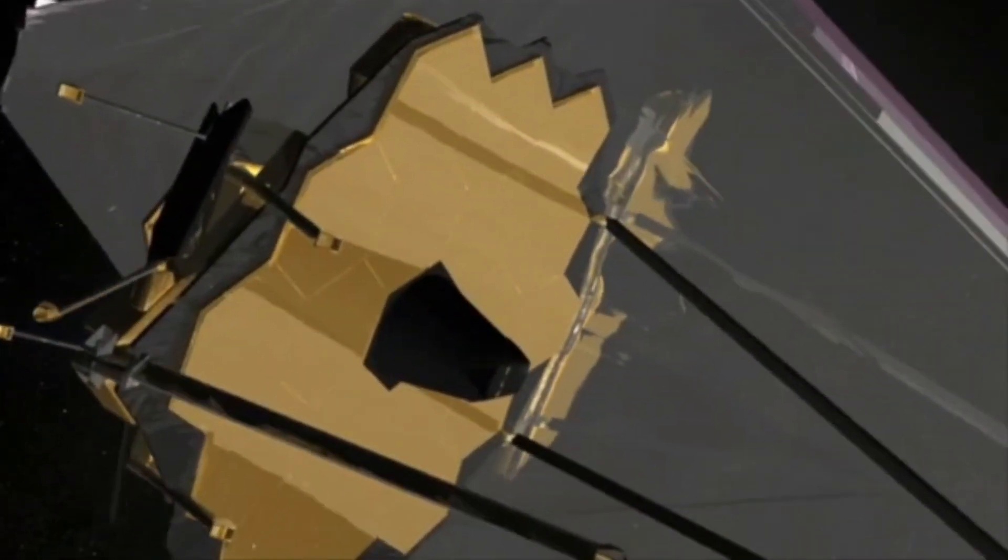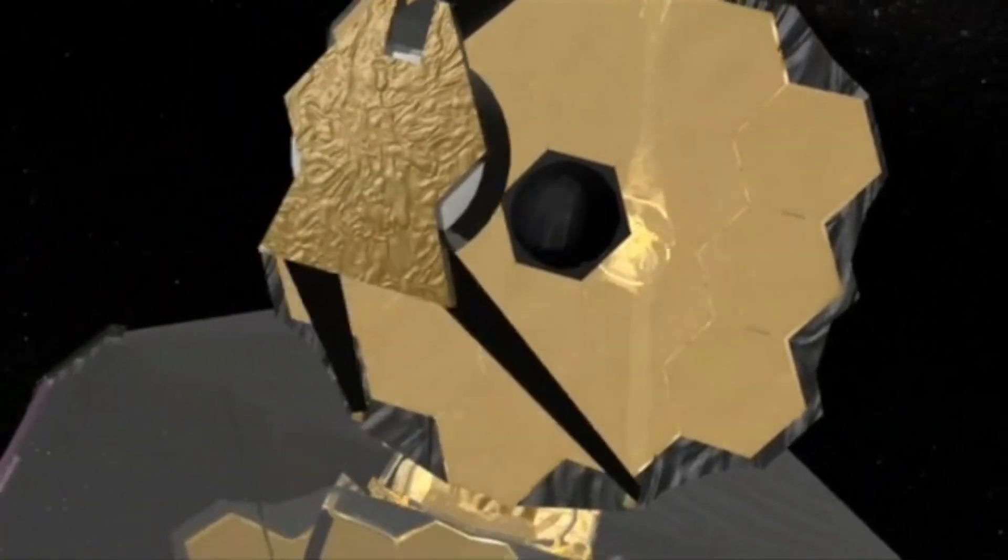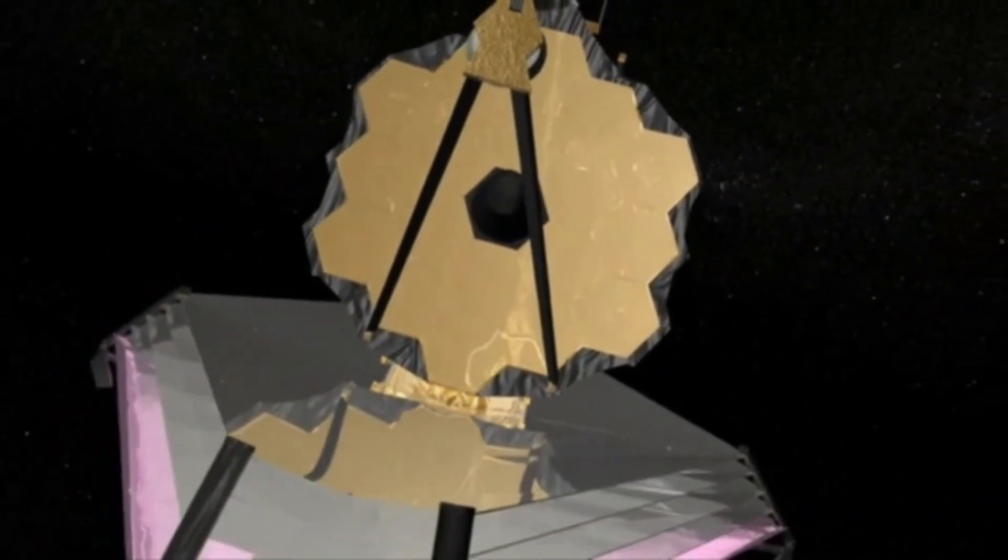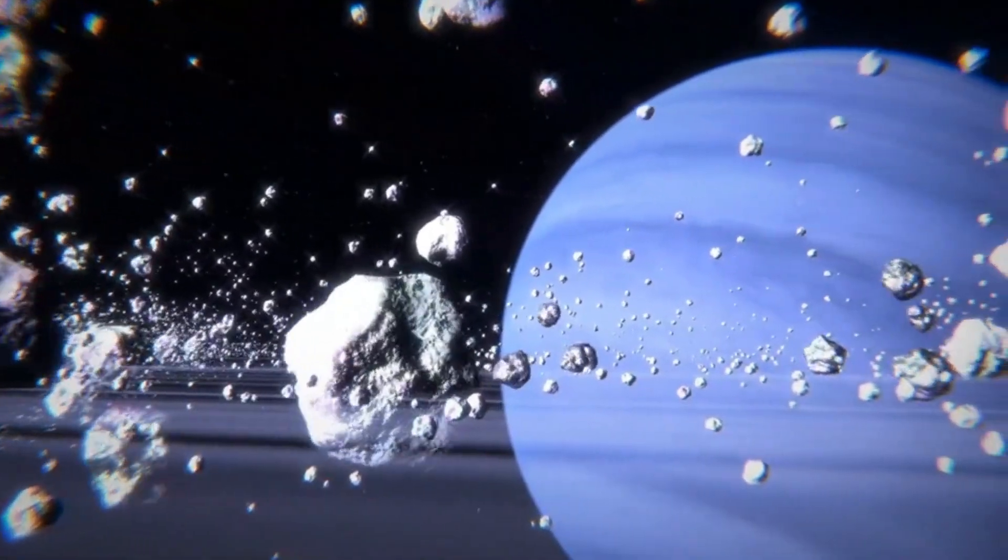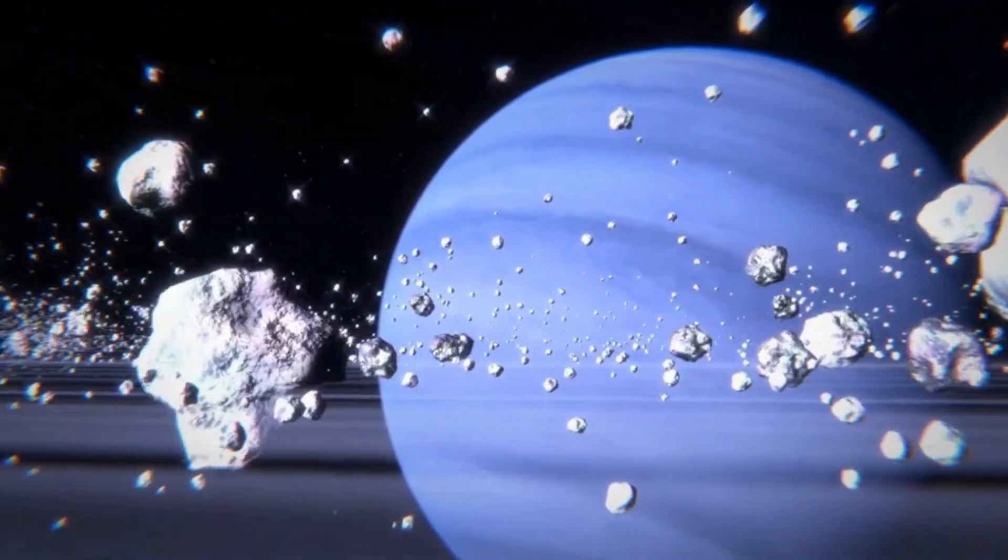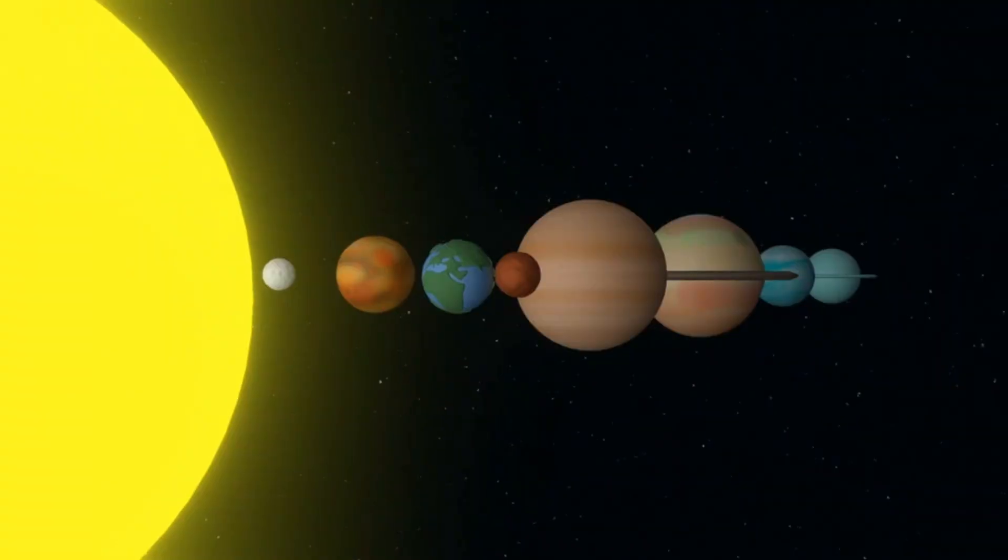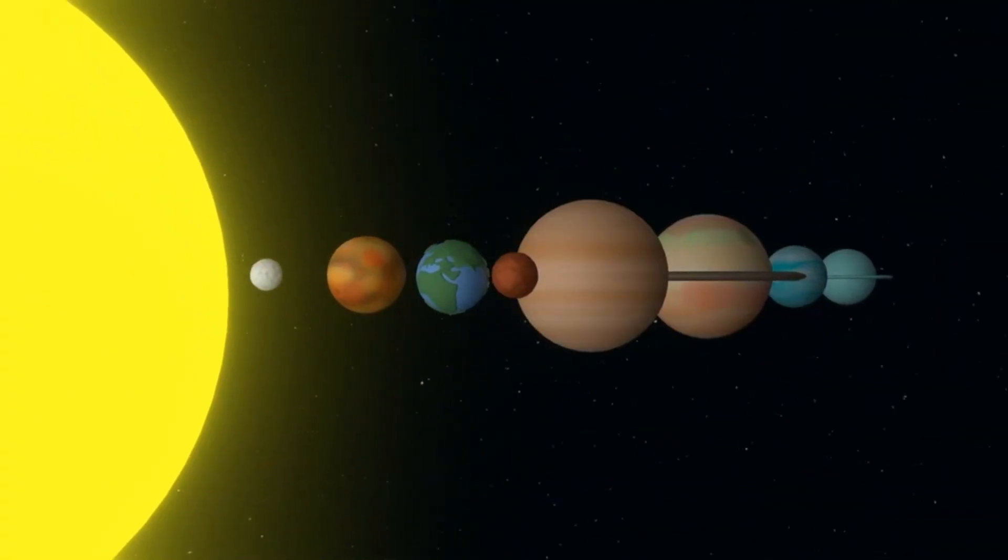The James Webb Space Telescope, humanity's most sophisticated eye in space, recently detected a staggering cosmic event that has sent ripples of excitement and curiosity through the scientific community. Far beyond the familiar glow of Earth's moon and the orbits of Mars and Jupiter, at the cold edges of the solar system, something colossal slammed into Neptune.